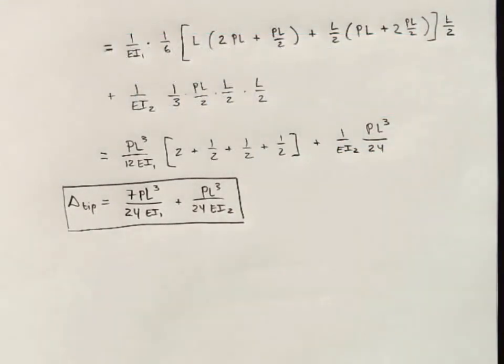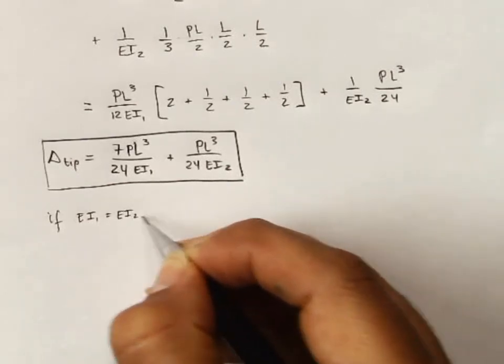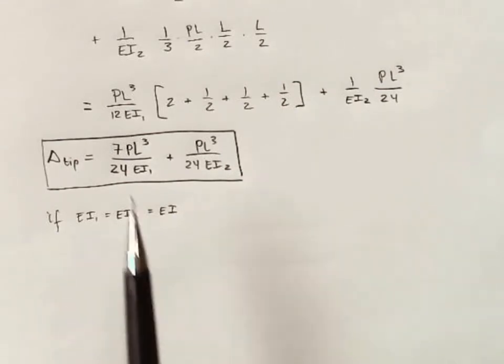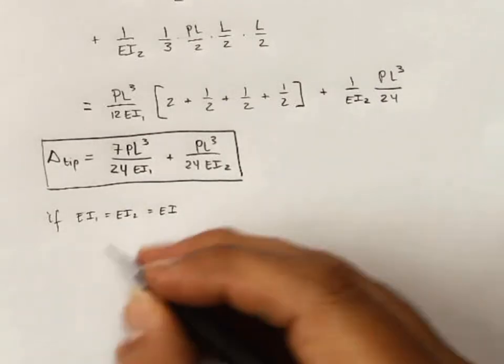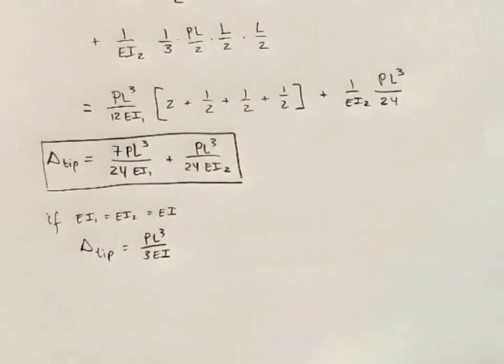Now this answer is just a jumble of variables and numbers. It's really hard to know if this is correct or not. So let's look at two ways of checking our work, or at least seeking consistency in our work. Way number one is to think, what if EI 1 is equal to EI 2 is just equal to a constant EI? So this would just be a cantilever with a fixed cross-section. In that case, we have 7 plus 1 on the top, or 8 twenty-fourths. 8 twenty-fourths is one-third. Delta at the tip would be equal to PL cubed over 3 EI. Which we'll recognize as the correct answer for the deflection at the tip of a cantilever with a constant section throughout. So we're happy.